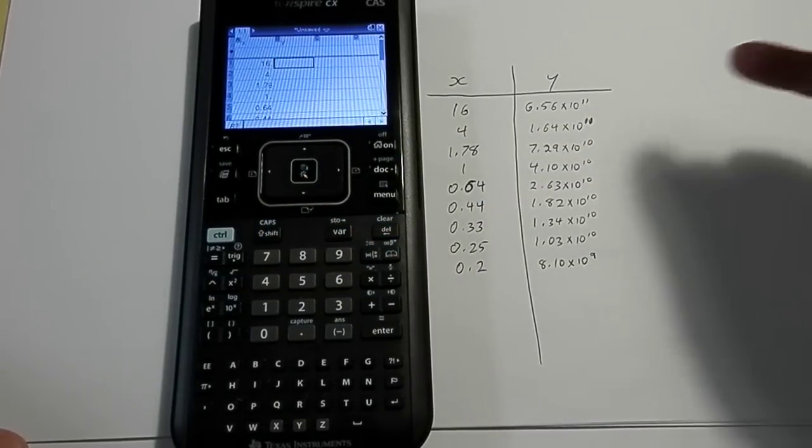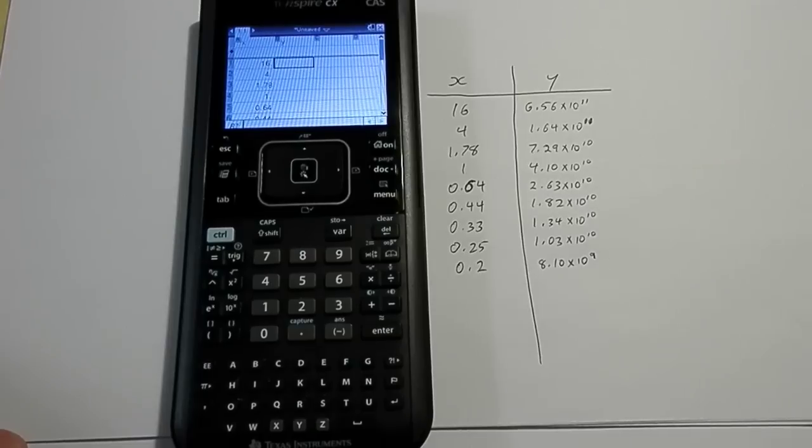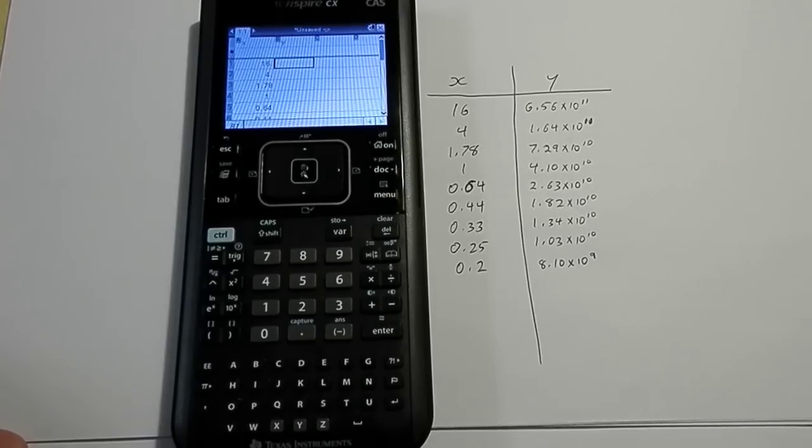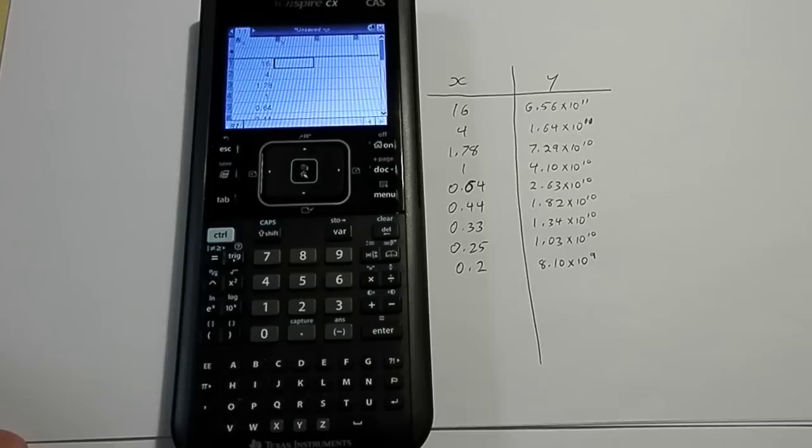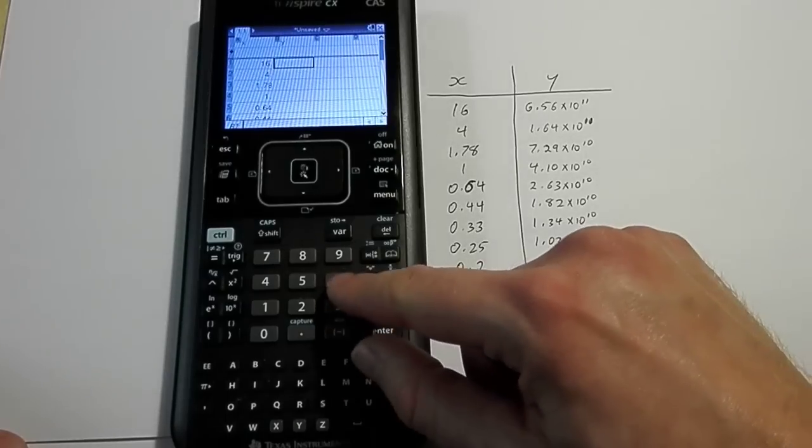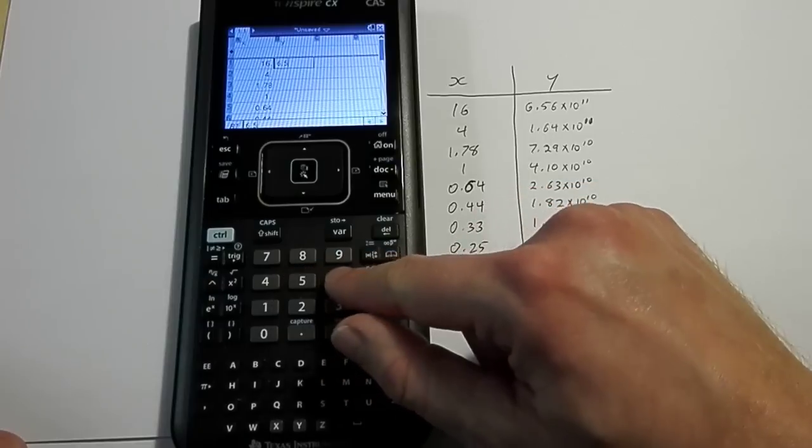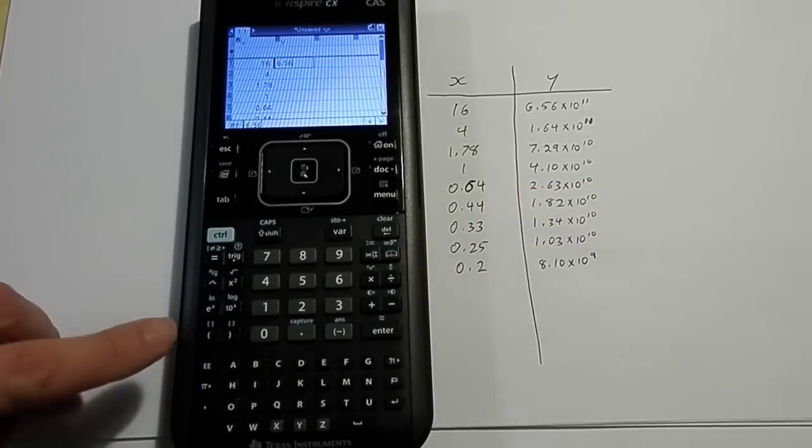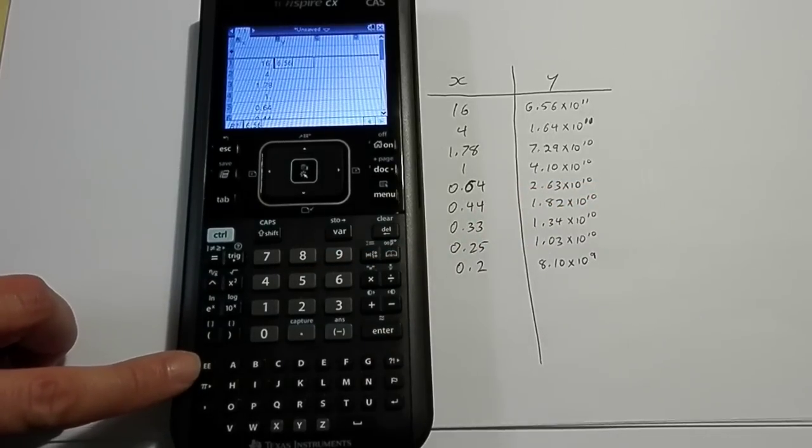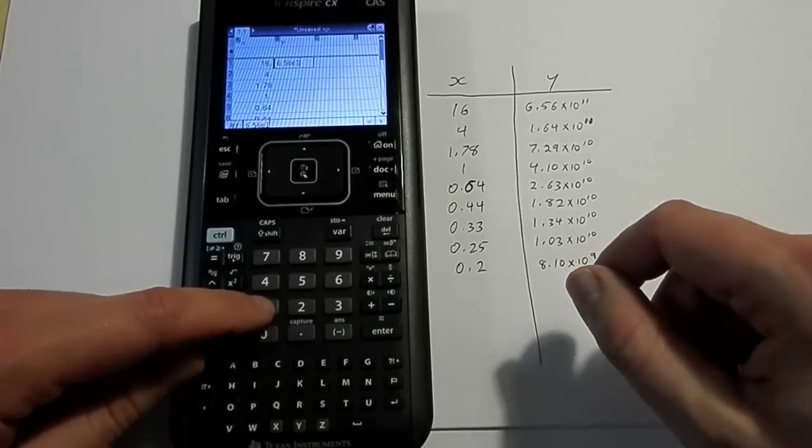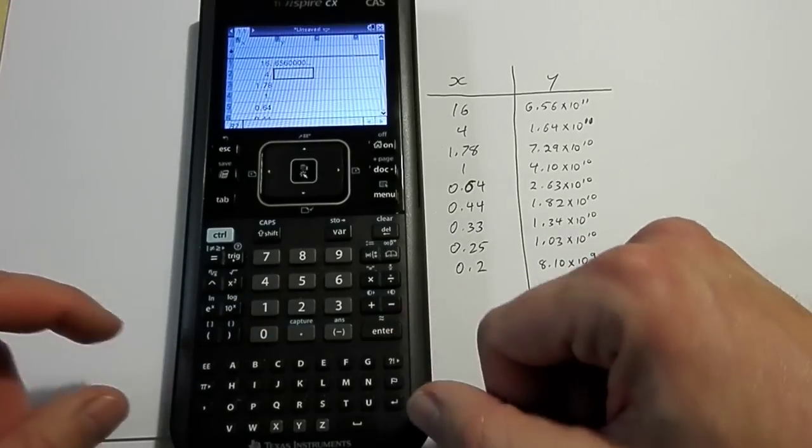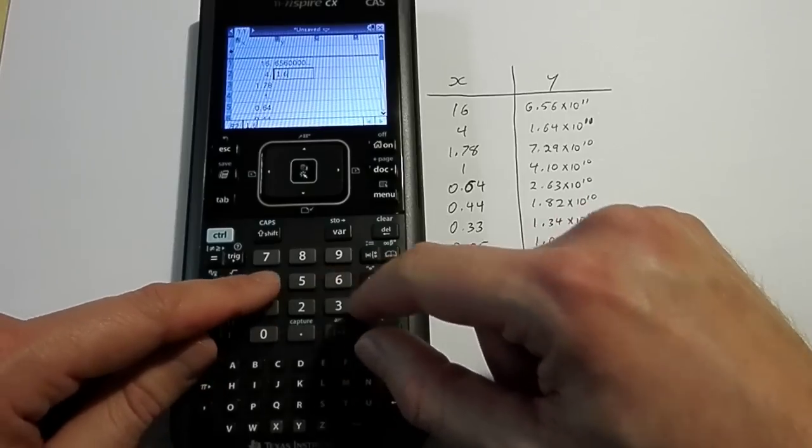Now, the thing I do have to be careful about is, all of these Y values do have scientific notation, and I do have to enter them in that way, because it will affect my final answer. So, I start typing in 6.56, and just like I would whenever I'm doing scientific notation, I use my EE button to get it times 10 to the power of 11, and I start going in and typing in all my numbers.